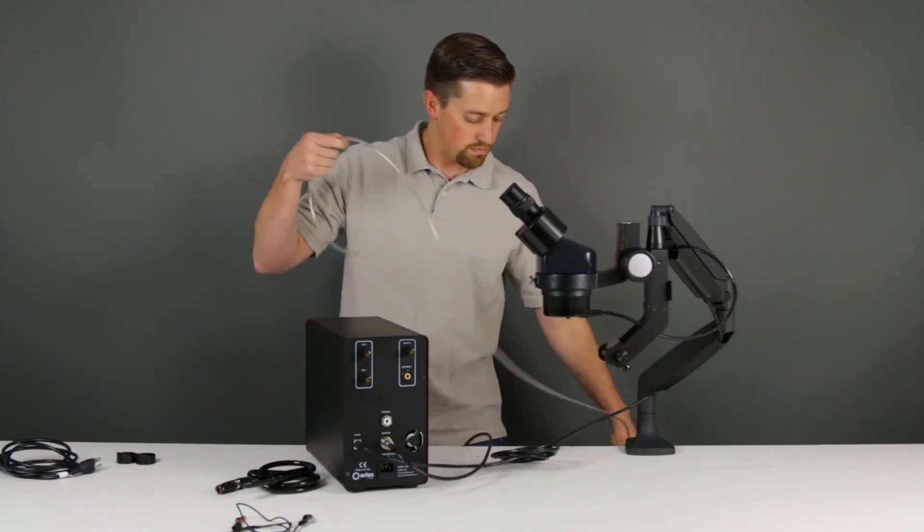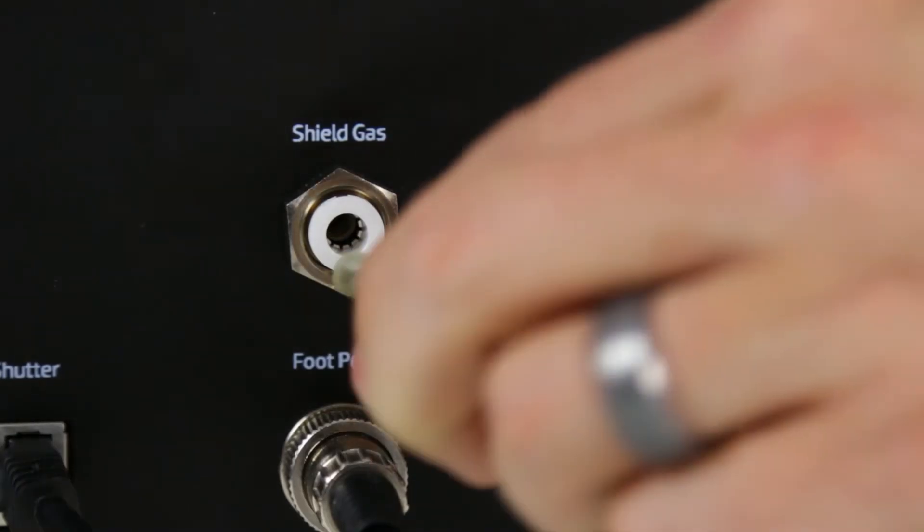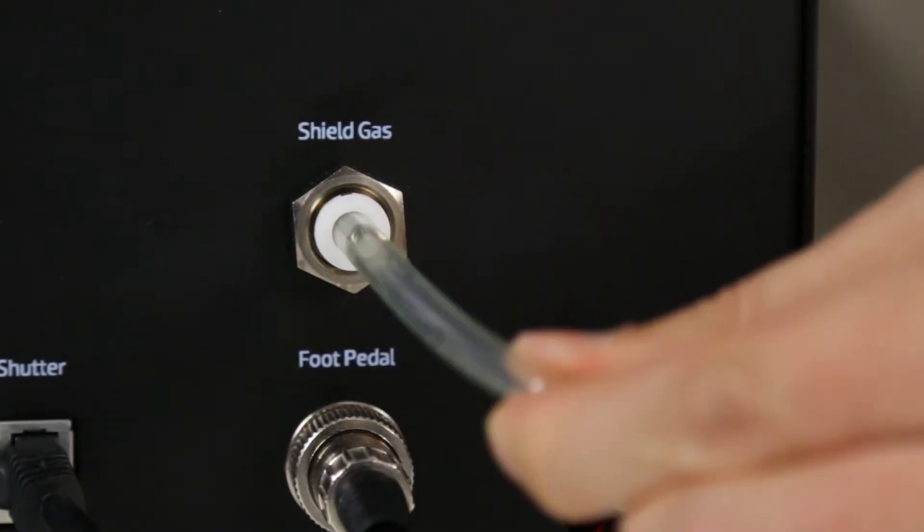Connect the gas tubing into the port marked shield gas on the back of the welder. Push the tube in and tug to make sure it is secure.